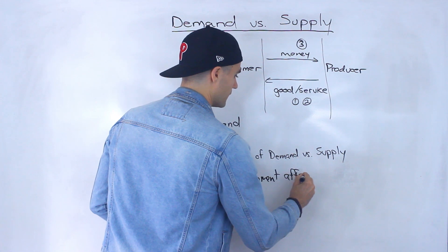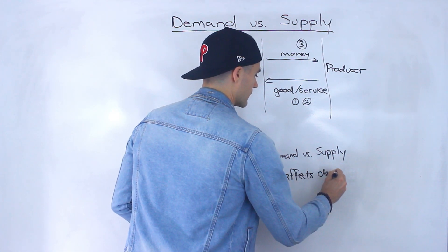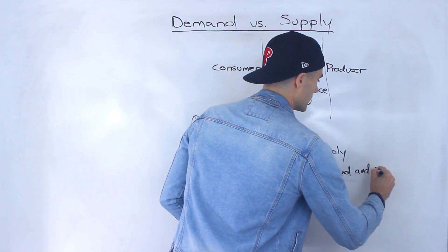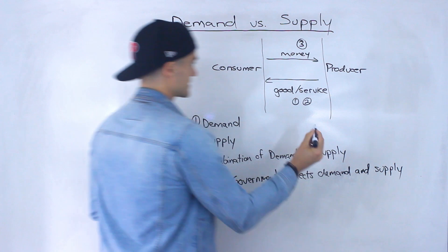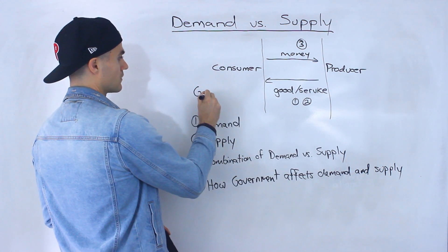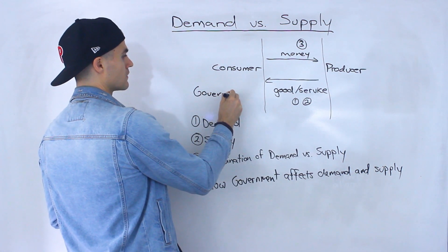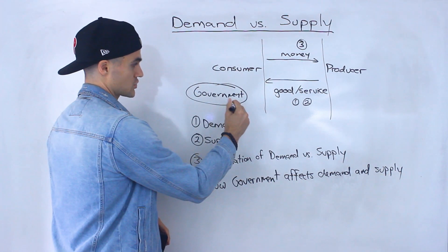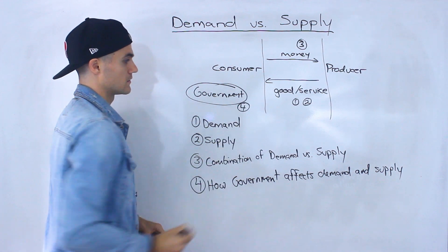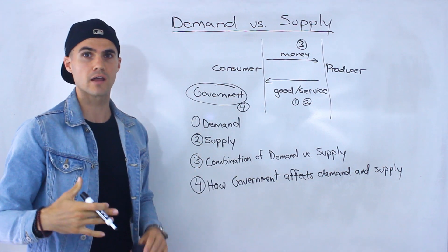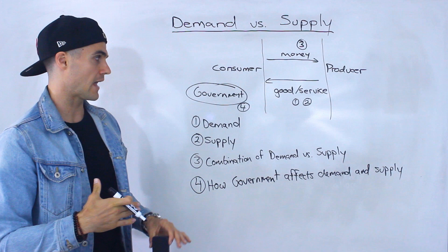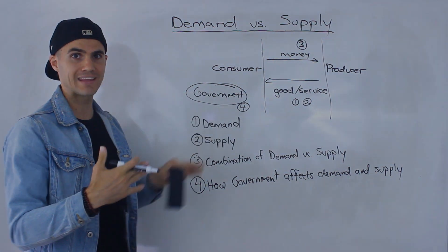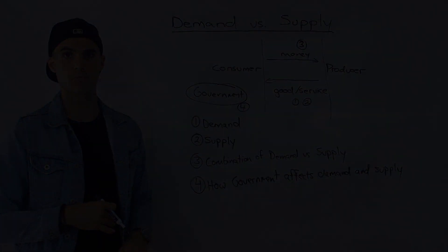There's going to be another party — a government — that can regulate this transaction. This fourth part of the section will cover things like price floors and price ceilings, and how that type of government regulation can affect demand and supply.